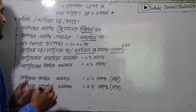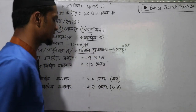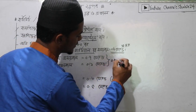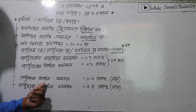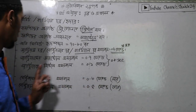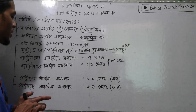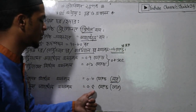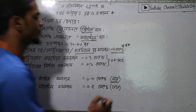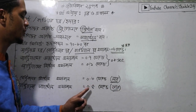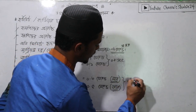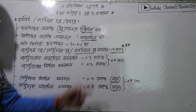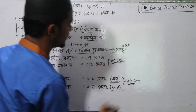RTL diastole is 0.7 seconds. RTL diastole is 0.1 seconds. So the result is 0.8 seconds. The result is 22 diastole is 0.3 seconds. The result is 23 seconds. 0.5 seconds, then 0.5 seconds. 0.8 seconds, then 0.5 seconds.